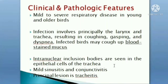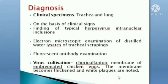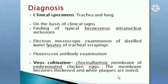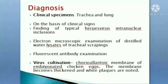Mild sinusitis and conjunctivitis can be noticed, and the principal lesion is tracheitis — inflammation of the trachea. Clinical specimens include trachea and lung. Diagnosis is based on clinical signs, finding typical herpesvirus intranuclear inclusions, and electron microscopic examination of distilled water lysate of tracheal scrapings. Virus cultivation is done on the CAM route of embryonated chicken eggs — the membrane becomes thicker and white plaques are noticed.